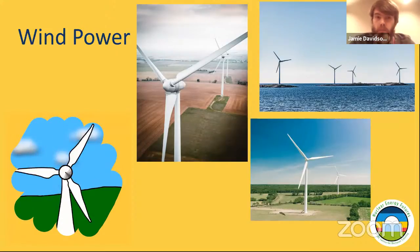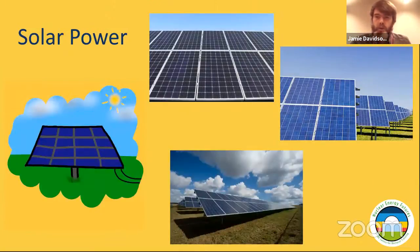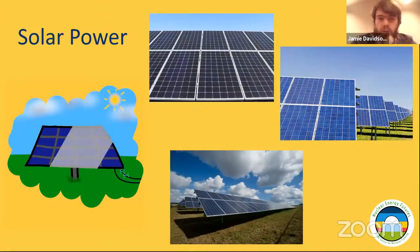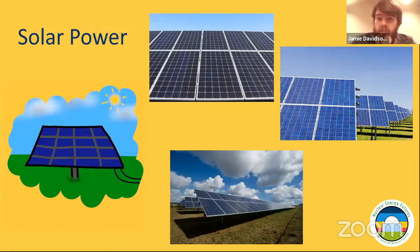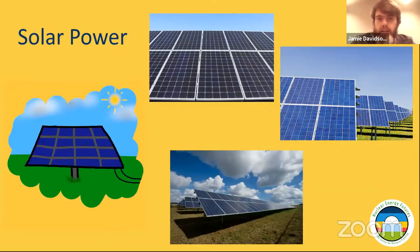Another option is solar power. Solar power — I'm sure you've already seen it — big panels. Some people have them on the roofs of their houses, but also you may see them in big fields with loads of them. What solar power does is take the energy from the sun, the heat and the light, and it captures it and turns it into electrical energy.